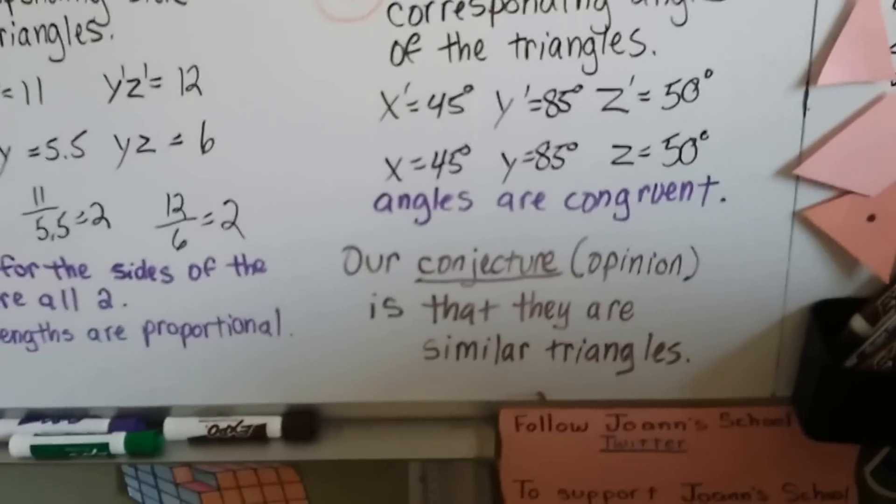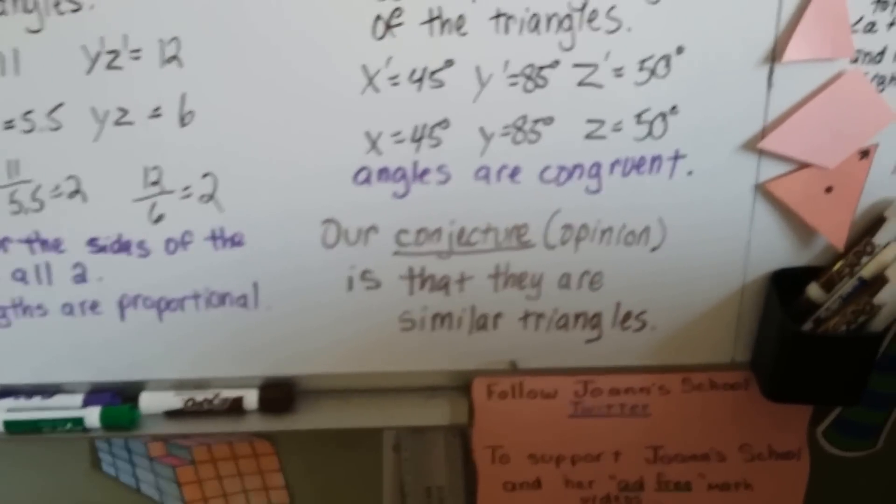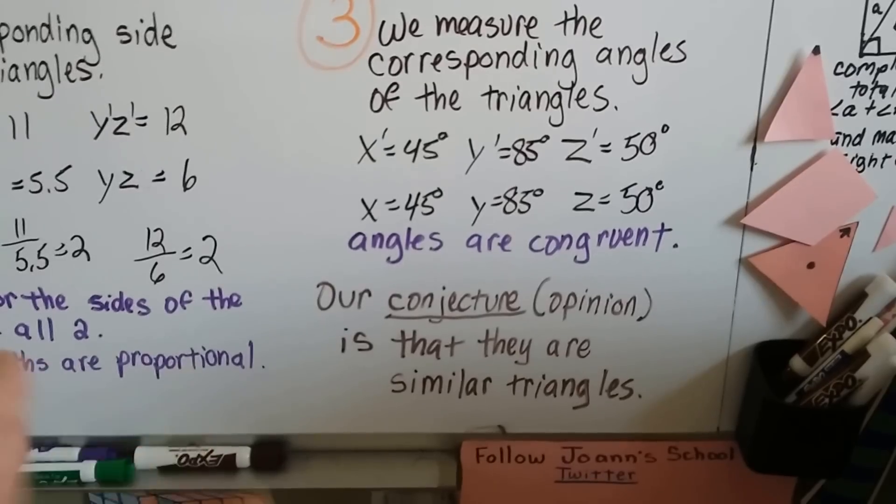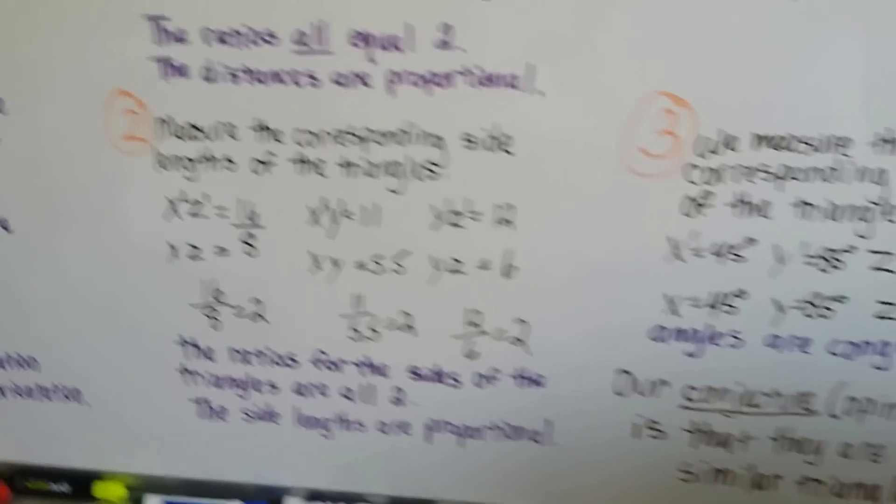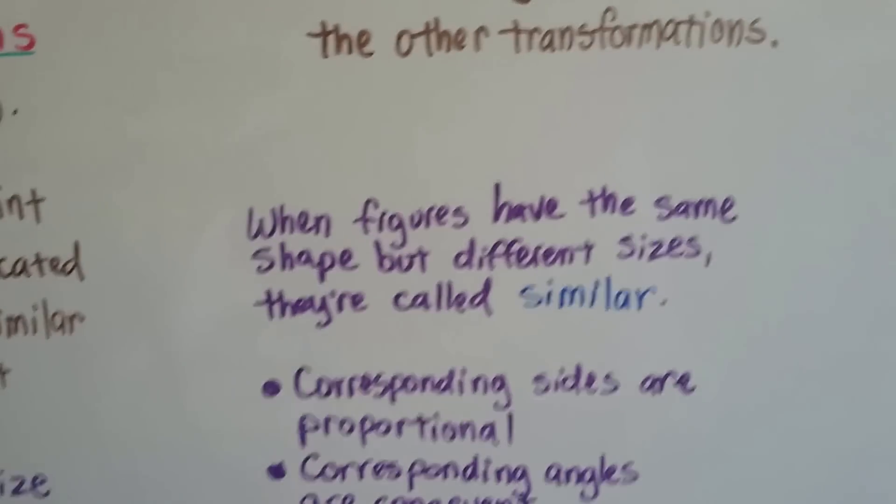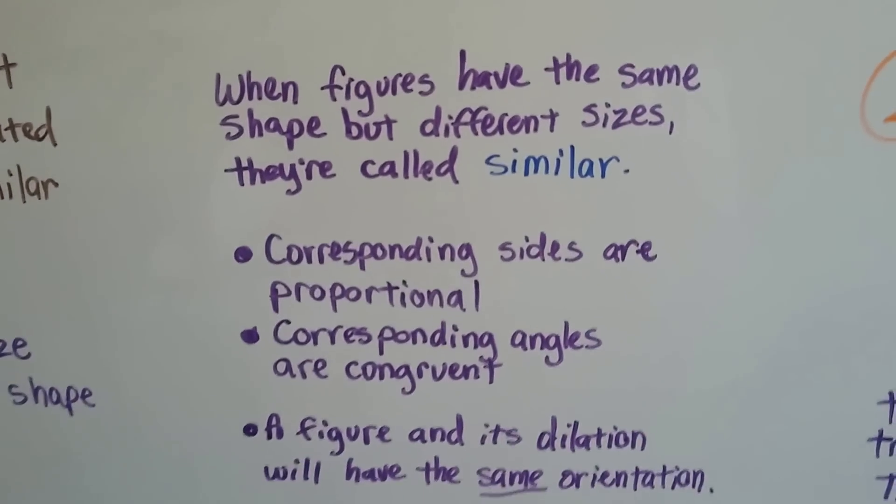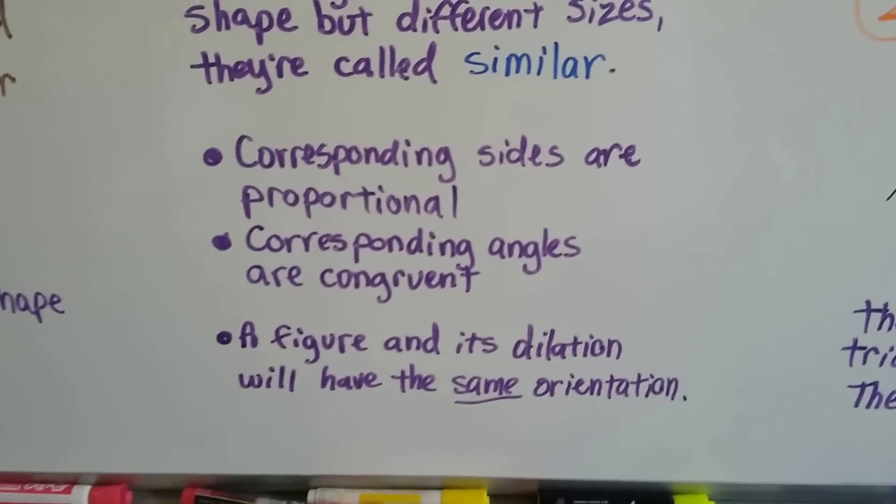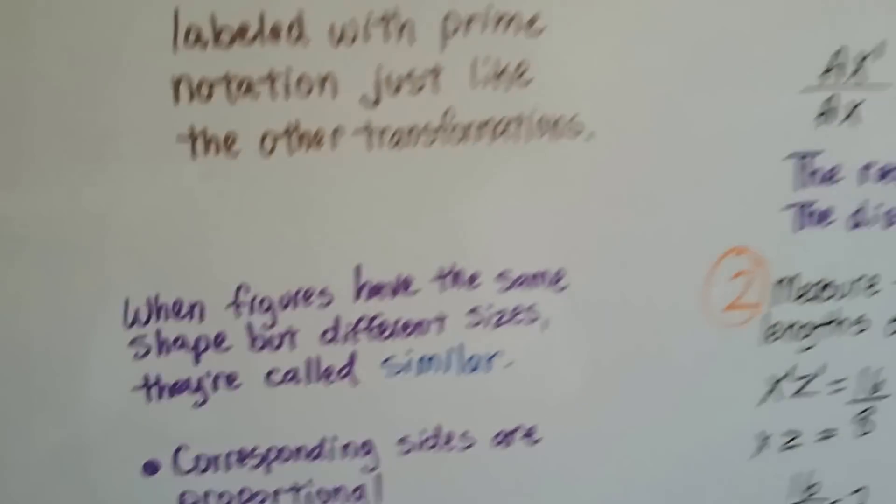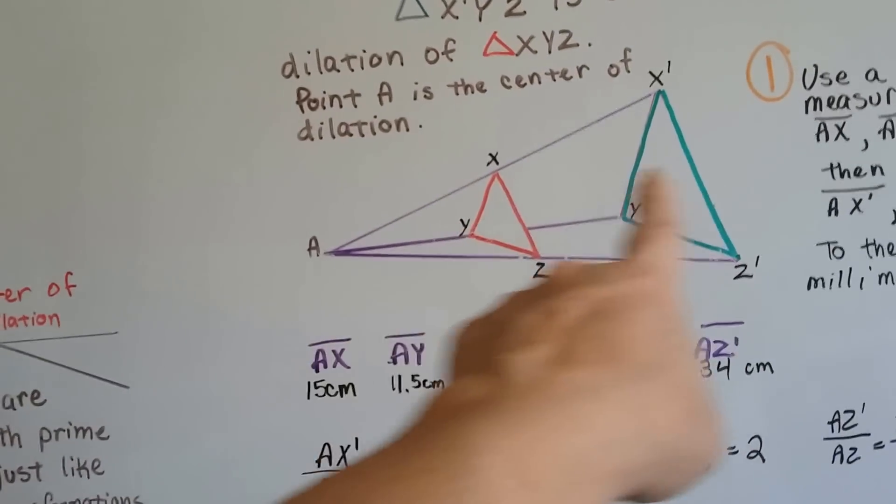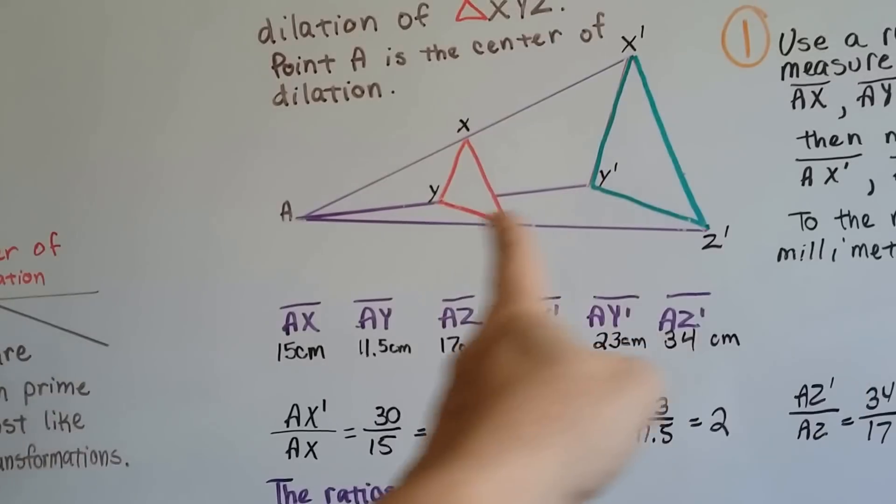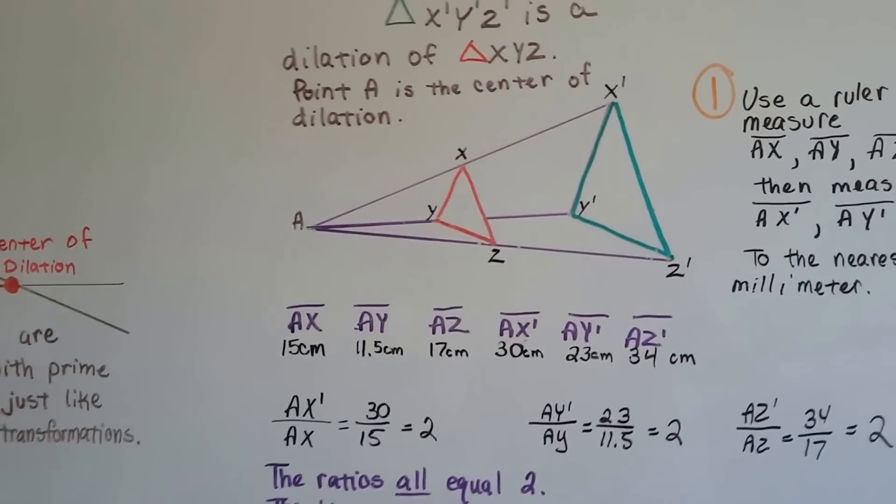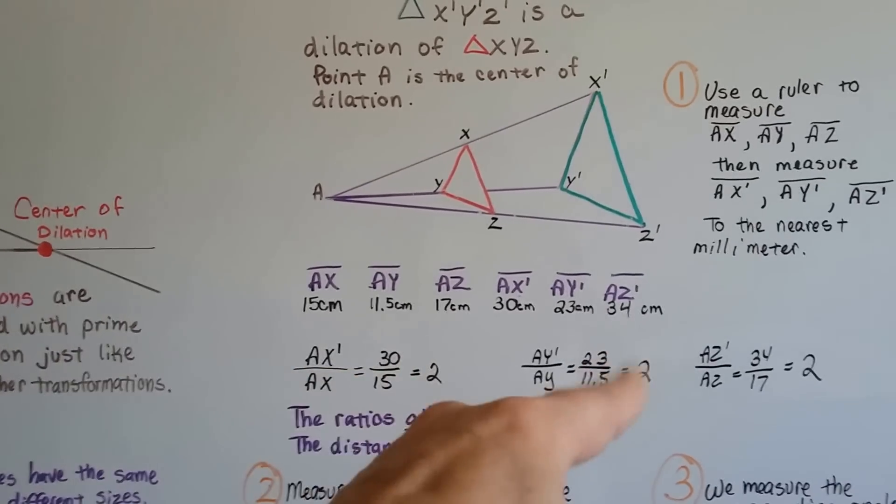Our conjecture, which is an opinion based on partial information. Conjecture, you don't have all the information. So, you make an opinion based on not quite having all the information. So, our conjecture is that they're similar triangles. When figures have the same shape but different sizes, they're called similar. Corresponding sides are proportional. Corresponding angles are congruent. And a figure in its dilation will have the same orientation. Wouldn't you say they have the same orientation? They're both kind of faced like that, coming on an angle. And they're in proportion to each other. All the measurements are in proportion because of the little fraction ratios we did.